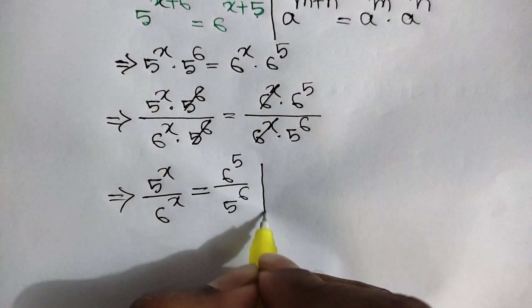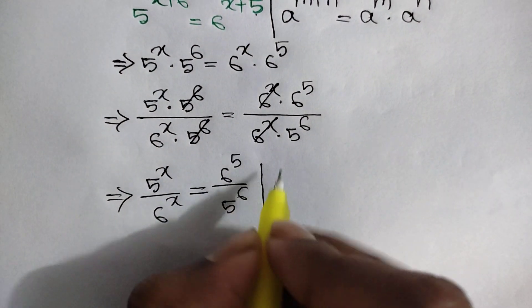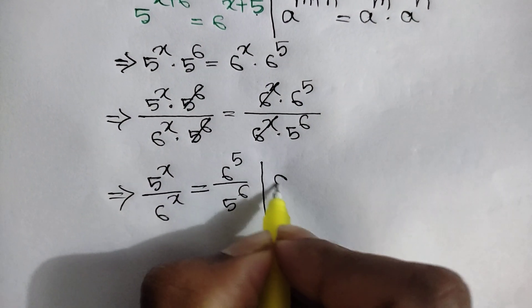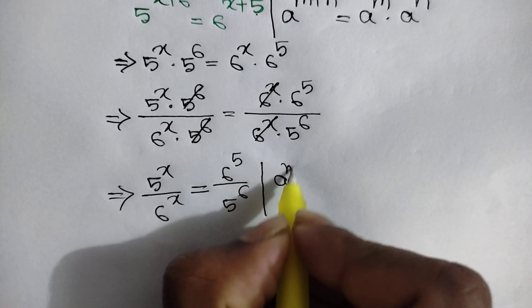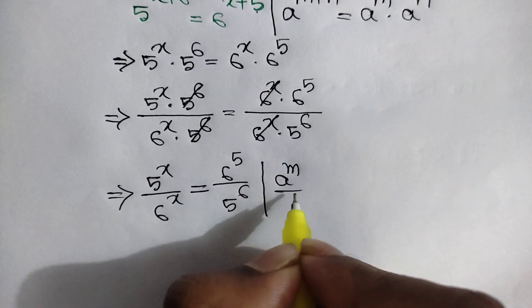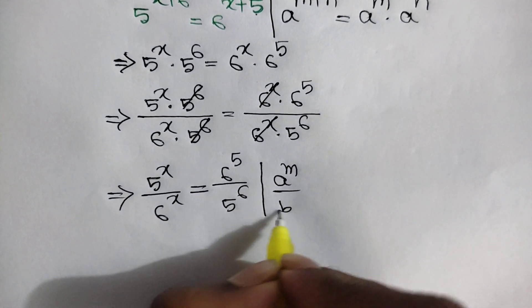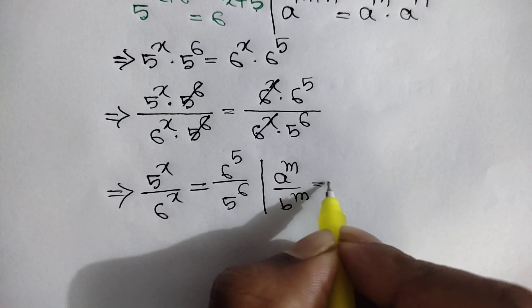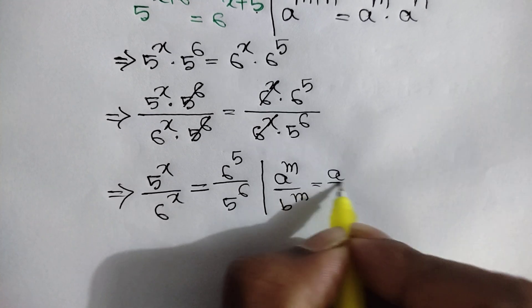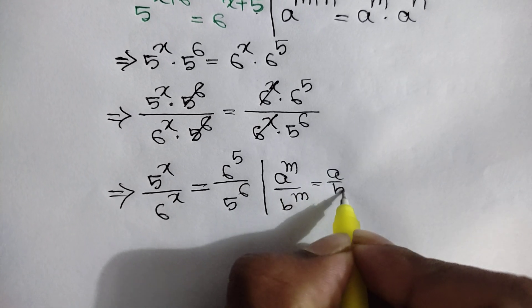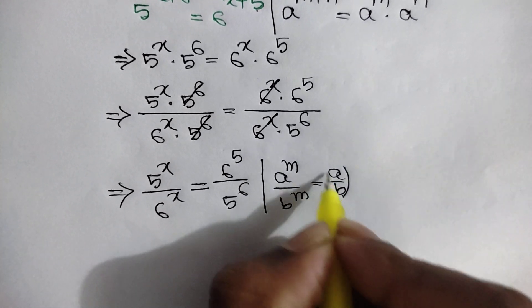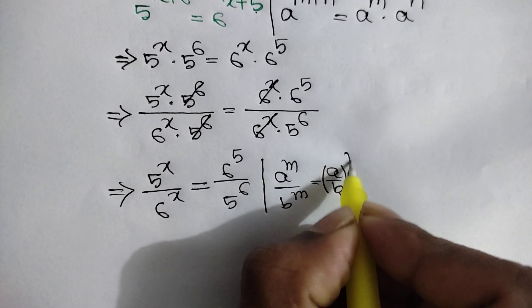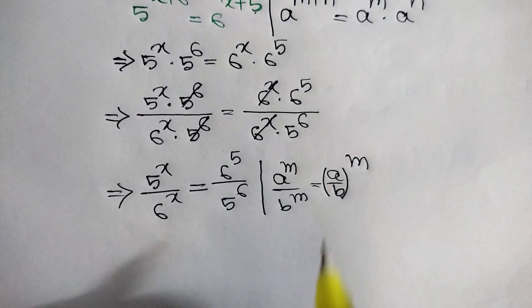Here we can apply this rule: a to the power m over b to the power m is equal to a over b to the power m. So we can write 5 over 6 to the power x is equal to 6 to the power 5 over 5 to the power 6.